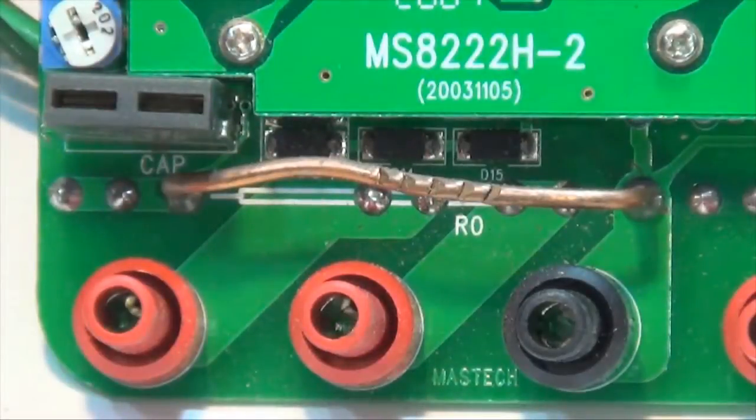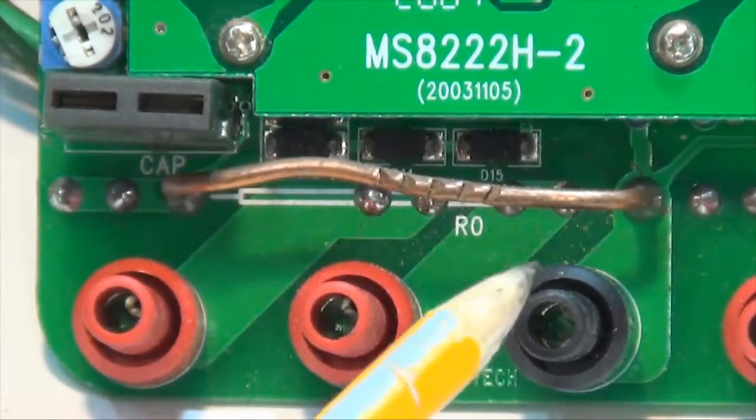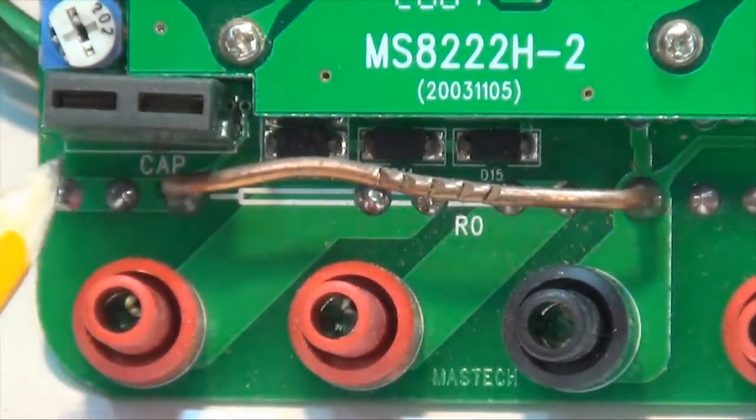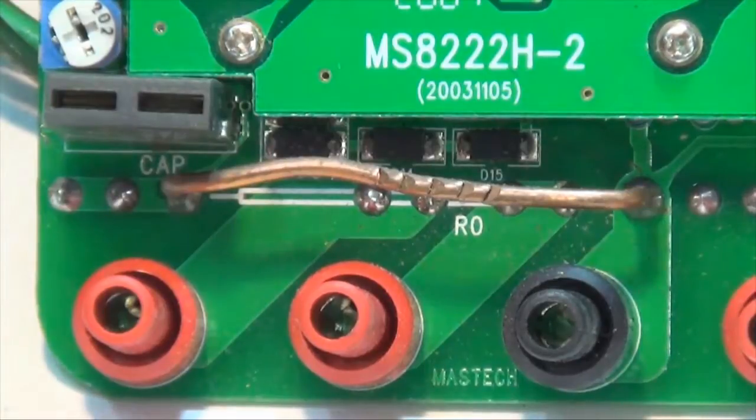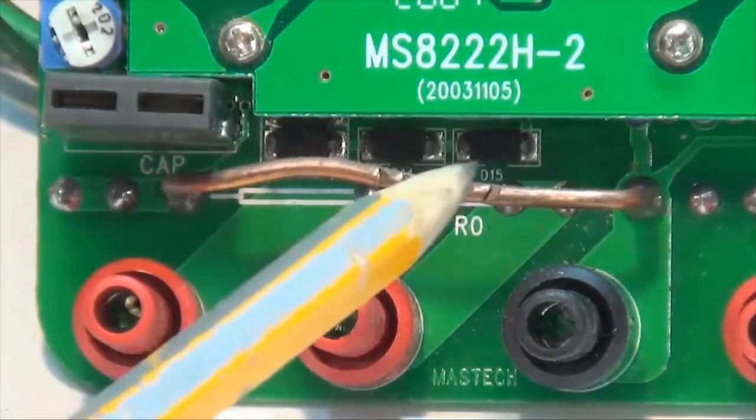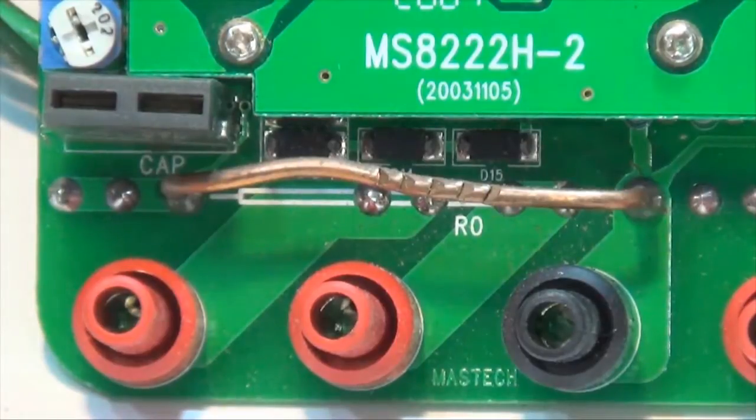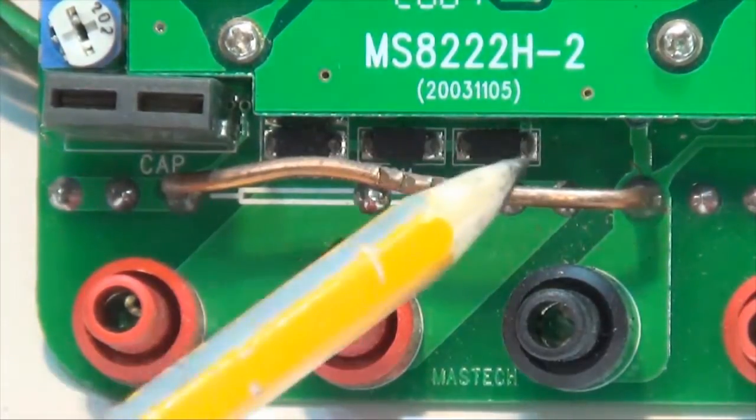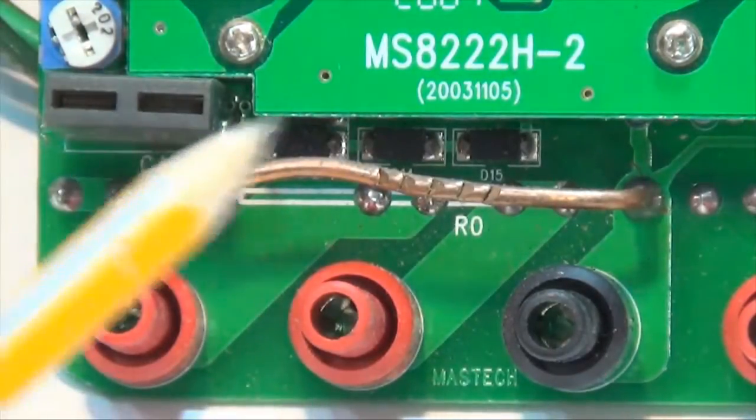So this is a close-up view of that connection that goes from the common jack to the 10 amp jack through a fuse that's on the backside. This is very substantial and we know that from our theory that the thicker the wire and the longer the wire, the lower the resistance. So you can see that this is going to have a very, very low resistance. They call that a current shunt.